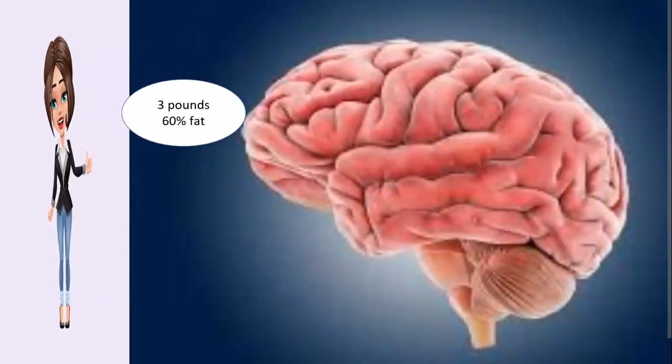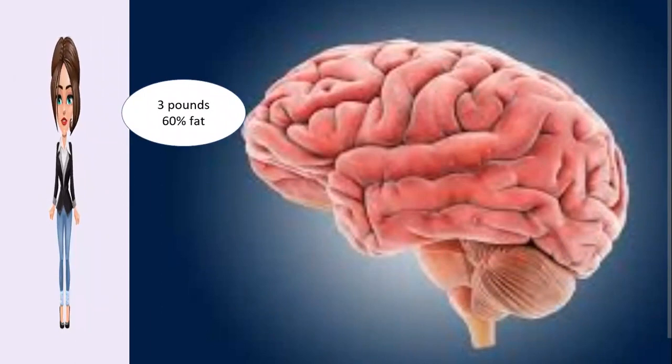An average adult brain weighs about 3 pounds and is composed of 60% fat, with water, protein, carbohydrate and salt accounting for about 40%.